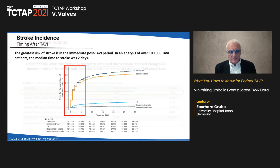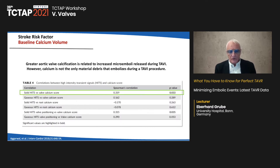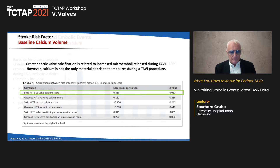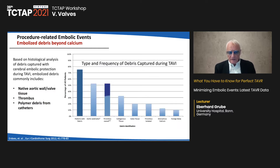Risk factors include baseline calcium volume. Increased microemboli are released during TAVI in heavily calcified valves, but calcium is not the only material that embolizes — debris also includes native aortic wall, valve tissue, thrombus, polymer debris from catheters, and more.